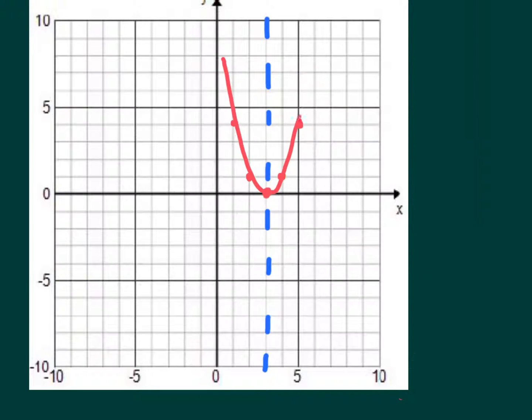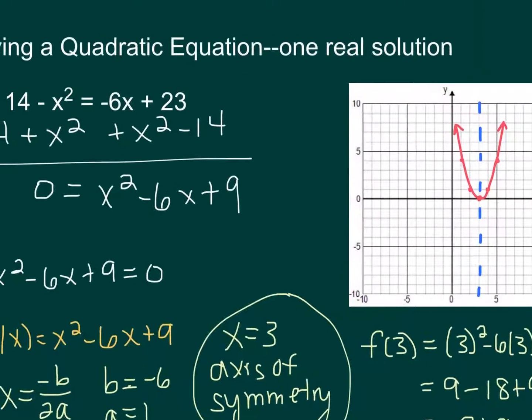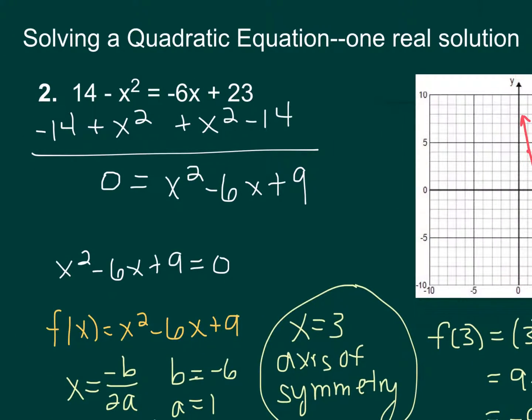And there's our quadratic, and we can see that it only crosses the x-axis once. So this one only has one answer, and that answer is 3. So x equals 3 is your final answer, and we found that by graphing.